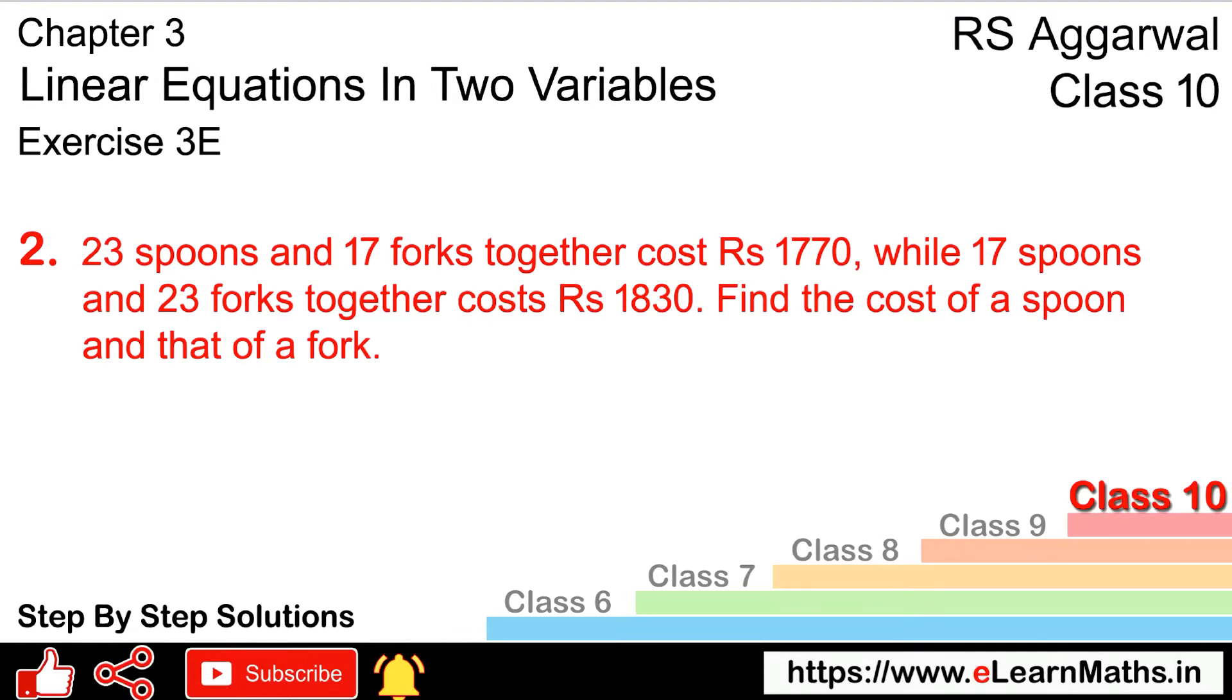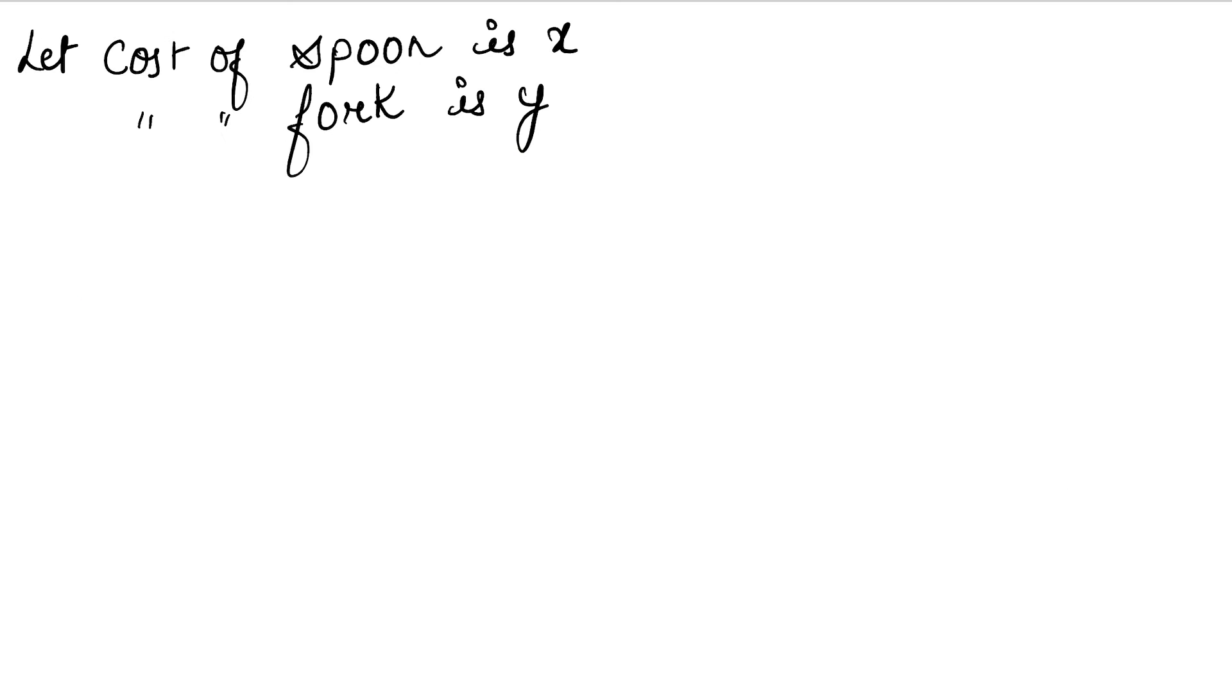Now see what we are saying. 23 spoons means 23x and 17 forks means 17y together. Together means plus. So 23x plus 17y equals 1770. Let's write the first equation: 23x plus 17y equals 1770. This is our first equation.